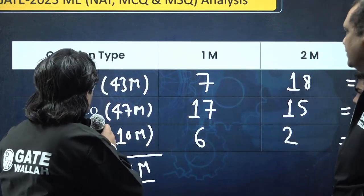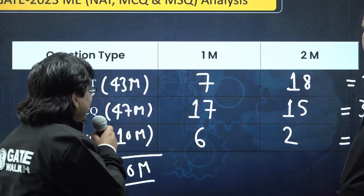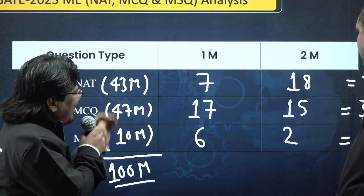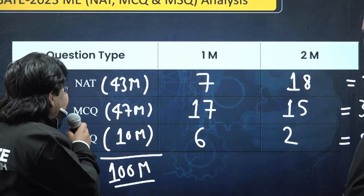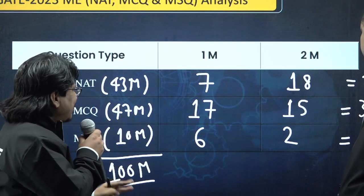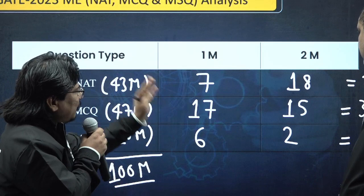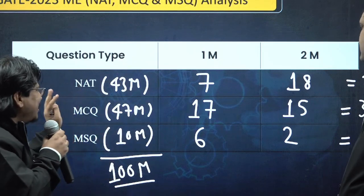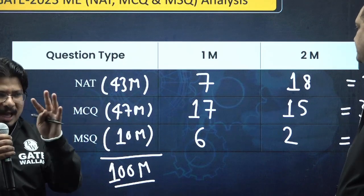As far as GATE 2023 Mechanical is concerned, there were a total of 25 NAT questions: 7 questions of one mark each, 18 questions of two marks each, totaling 43 marks. For MCQ, there were 32 questions: 17 questions of one mark each, 15 questions of two marks each, totaling 47 marks.